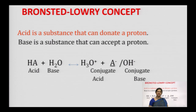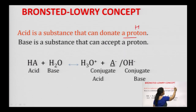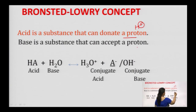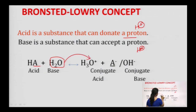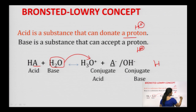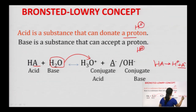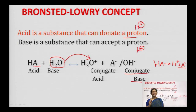Bronsted and Lowry gave another justification for the mechanism of action of acids and bases. As per them, an acid is a substance that can donate a proton, and a base is a substance that can accept a proton. In this reaction, HA is the acid which gives up the proton; the proton combines with water to give the hydronium ion. When HA has given the proton, it is left with A⁻ — this negative ion is the conjugate base. When an acid gives up a proton, it is left with its conjugate base.